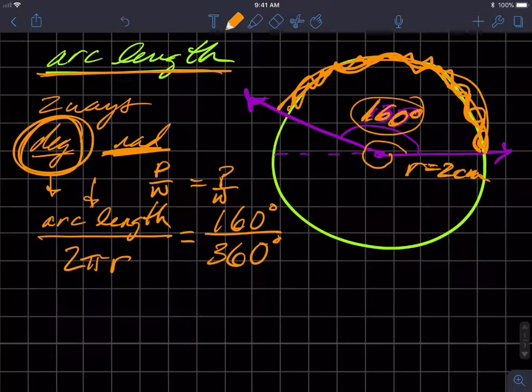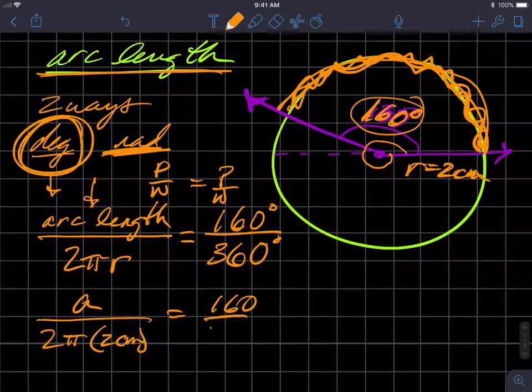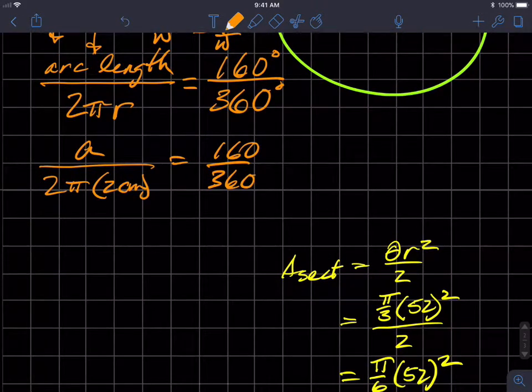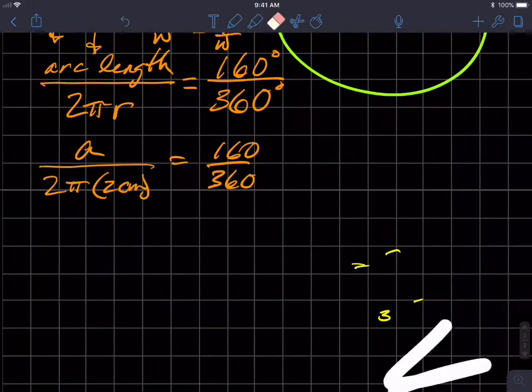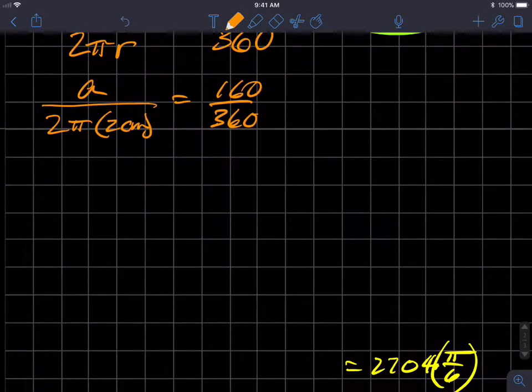This is the thing we're trying to determine. So arc length over 2π times two centimeters is equal to 160 over 360. And so that becomes, and I got a whole bunch of leftover stuff hanging out here from previously.